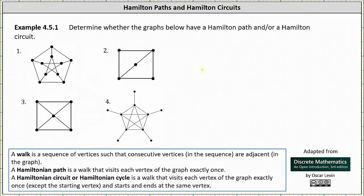Now let's determine whether additional graphs have a Hamilton path and/or a Hamilton circuit. Starting at the top vertex and going around the outside first, then moving inside — going right, down to the left, up, and down to the right — we have a walk that visits each vertex exactly once. The graph does have a Hamilton path. However, we are not able to return back to the starting vertex without revisiting other vertices, so the graph does not have a Hamilton circuit.